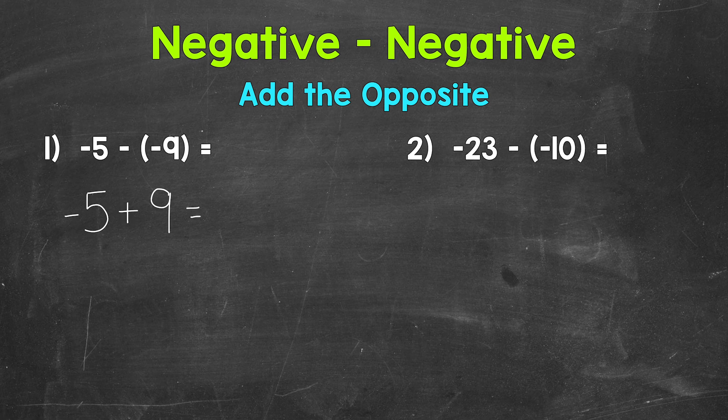Well if we take that negative five and add a positive five we end up with zero. Then we have four more from that nine and that gets us to a positive four.